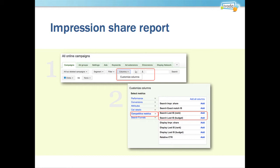Impression Share Reporting is available at a few different levels throughout the campaign. Looking at it at the campaign level is useful, and you can also look at it at the ad group level. There are a couple of different dimensions: display impressions, search impressions, lost impressions, and lost impressions due to exact match. At the campaign level, one of the most basic and widely used is Impression Share lost due to budget — how much you're losing just because you're capping your daily spend.